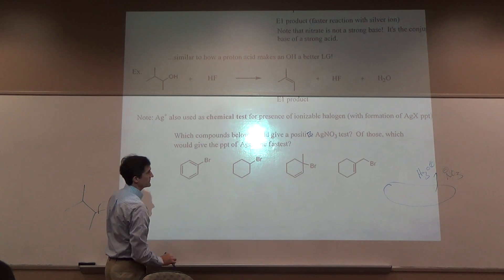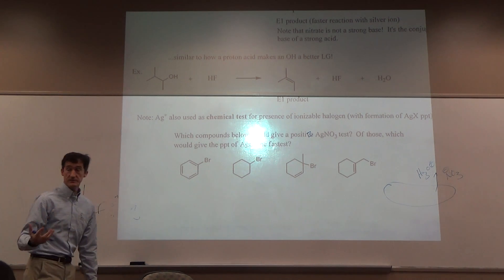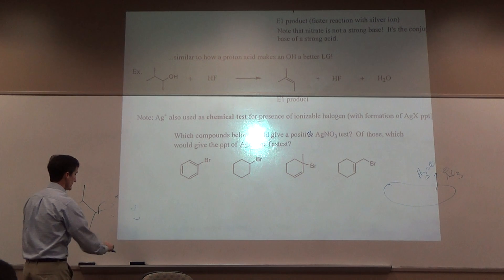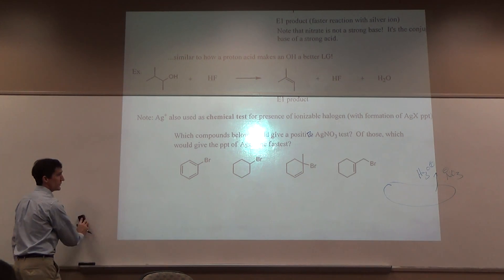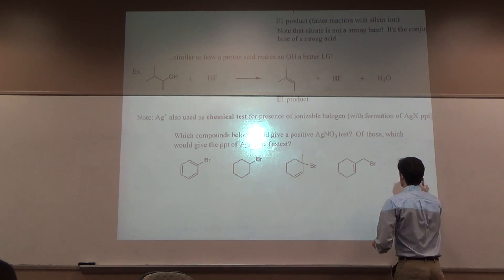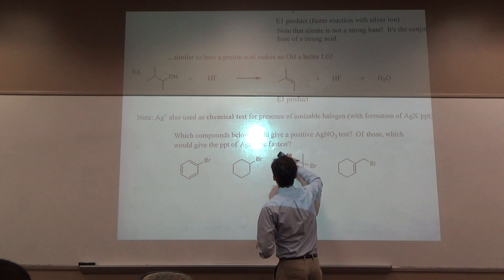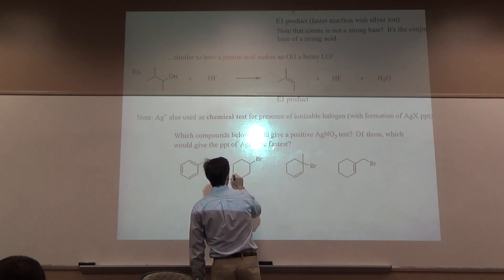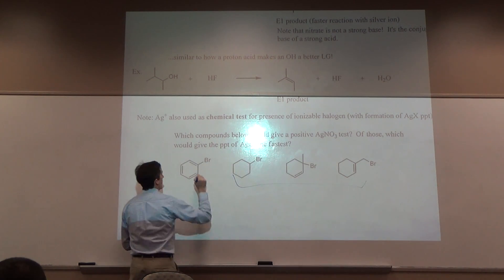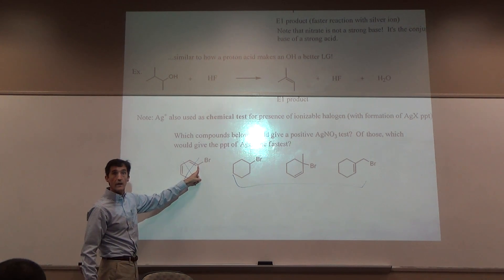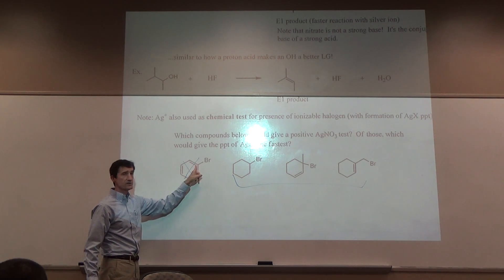Which compounds below would give a precipitate with silver nitrate? That is a positive test. Which ones would give a positive test? Which bromides are ionizable? Which compounds below these three? Not this one. Why? Because the halide is on what type of carbon? SP2. It's not going to ionize off of SP2 carbon.